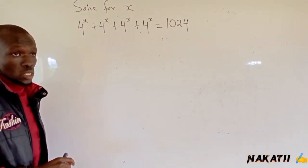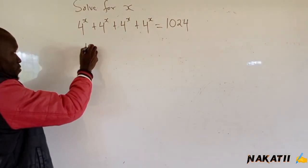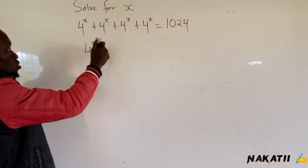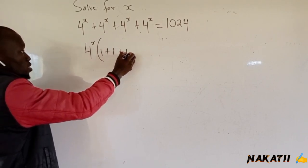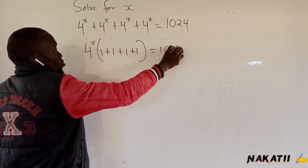Whatever is common is 4 raised to x. We'll have 4 raised to x. If you check, 4 raised to x goes here. 1 plus 1 plus 1 plus 1 equals 1024.